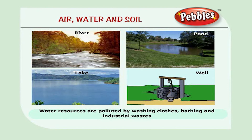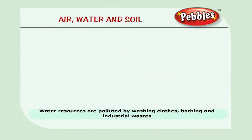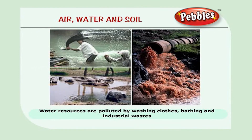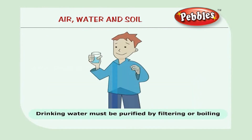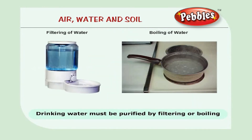Water resources like rivers, groundwater, lakes and ponds are polluted by washing clothes, bathing and industrial waste. Pollution is not good for health and hygiene. Drinking water must be purified by filtering or boiling.